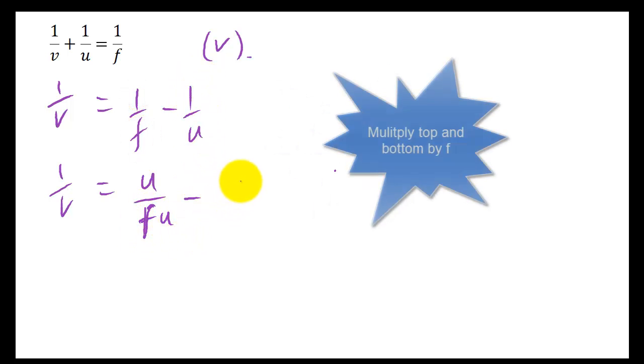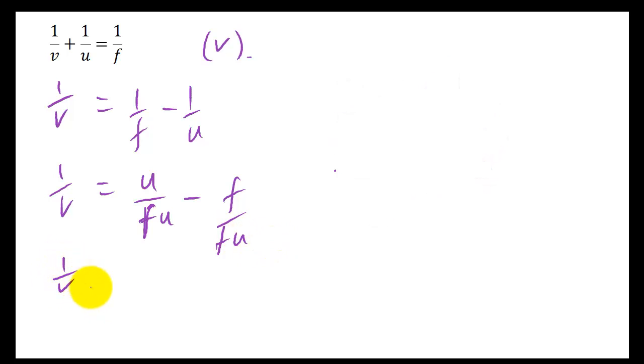Times top and bottom of this by F, you're left with 1 times F is F. F times U gives you FU on the bottom. So left with 1 over V equals, now we can subtract these because we've got the same denominator. So we've got U minus F over FU.